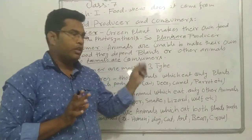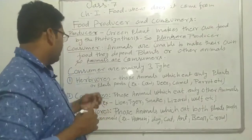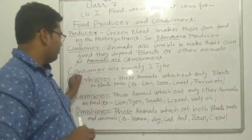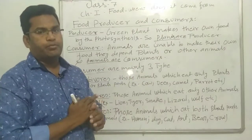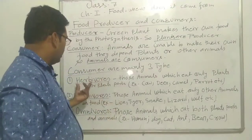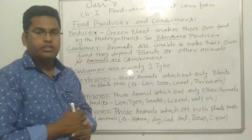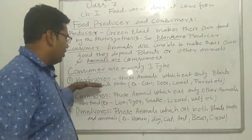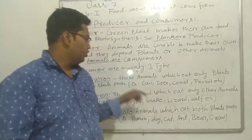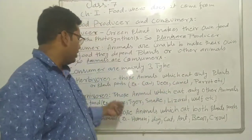Consumers are mainly of three types. The three types are called herbivores, carnivores, and omnivores. Those animals which eat only plants are known as herbivores.